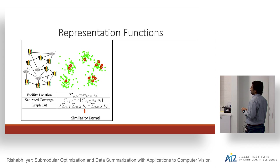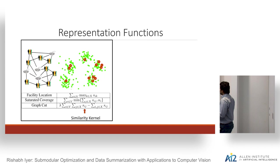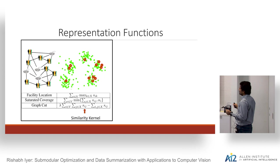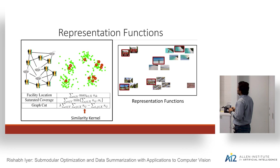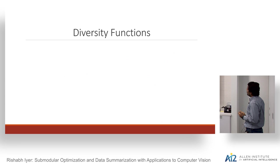Starting with representation functions, we have three specific kinds. We'll focus mainly on the facility location function. The idea of facility location is very similar to a k-means or k-medoids objective — when we maximize the facility location function, we want a set of points that intuitively are the centroids of clusters. These functions tend to pick out representative images from the entire set and ignore outliers.